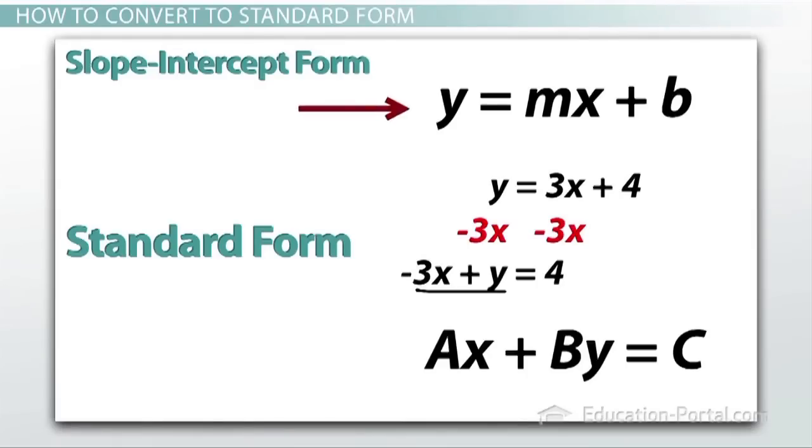But unlike slope-intercept form, the A's and B's do not necessarily give us any useful information like the m and b does in slope-intercept form. But that doesn't mean that there aren't still some advantages to standard form over slope-intercept form.